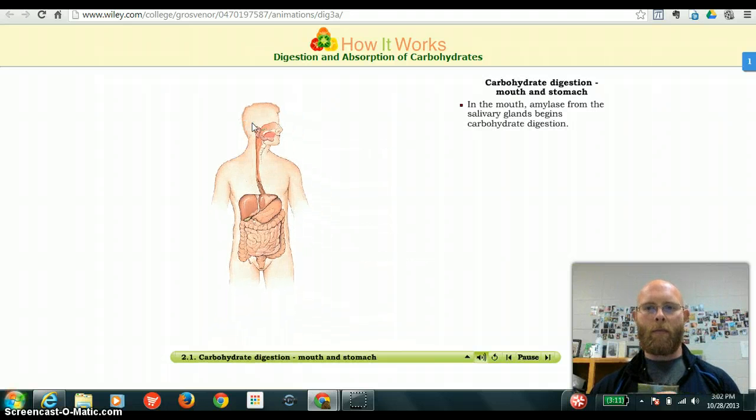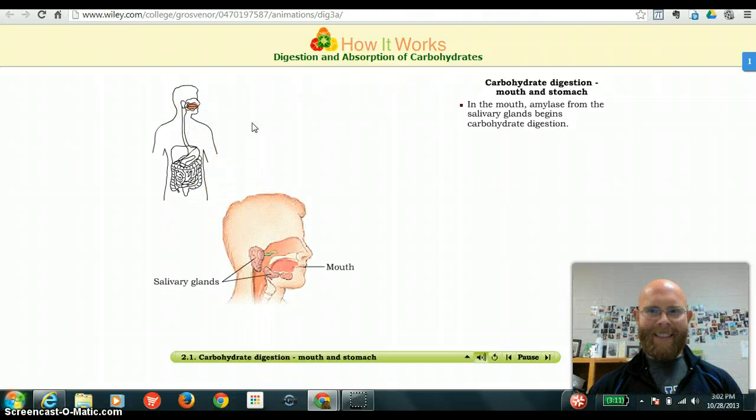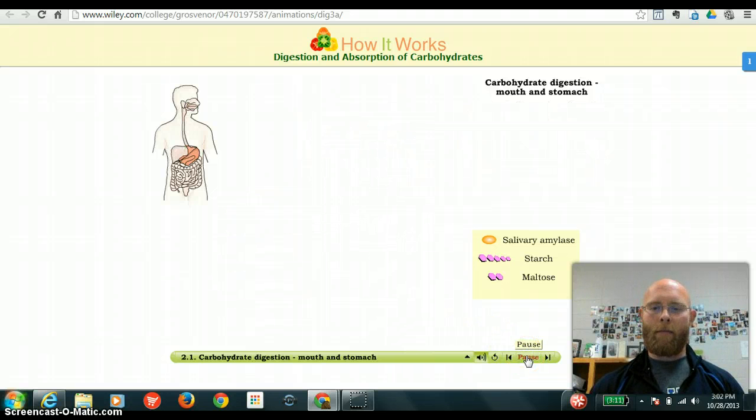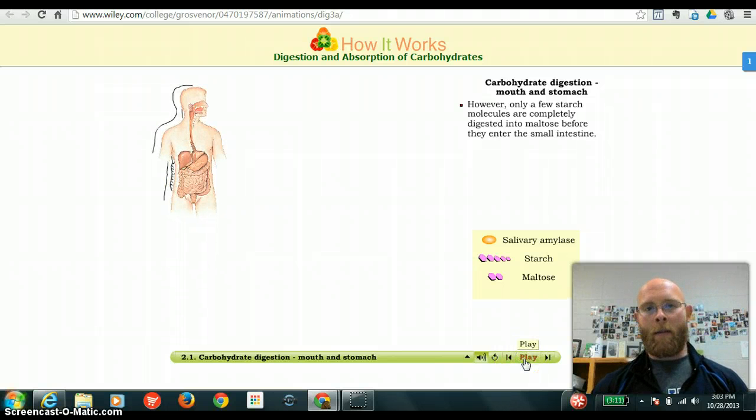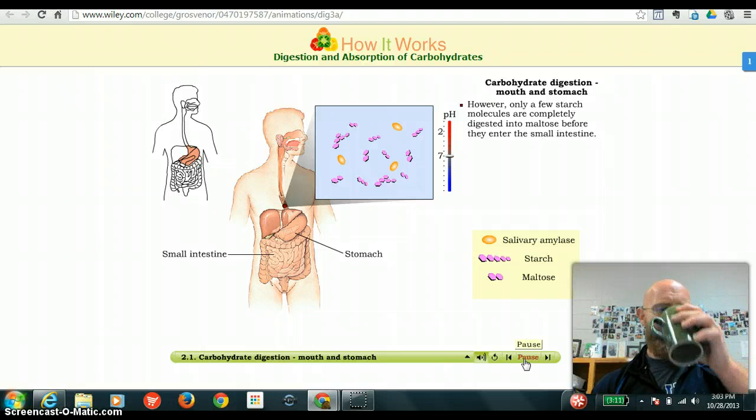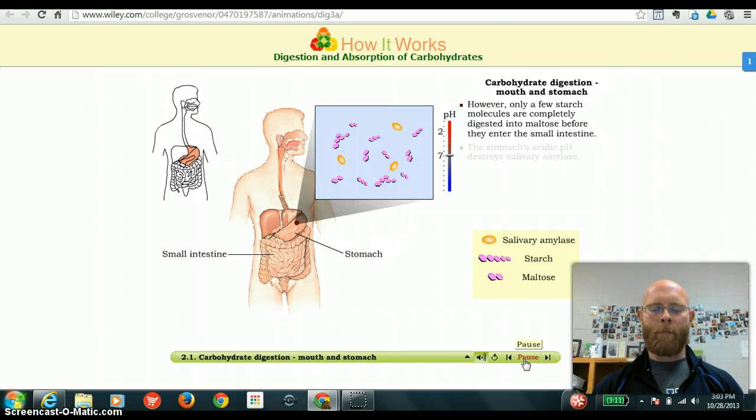In the mouth, amylase from the salivary glands begins carbohydrate digestion. Salivary amylase breaks starch down into smaller polysaccharides and sugars like maltose. However, when did the digestion of carbohydrates begin? Pay attention to things like that, because that's one of the things I want you to be able to do: identify when, where, and how these enzymes come into play and what they do. The starch molecules are completely digested into maltose before they enter the small intestine. This is because the acidic pH of the stomach destroys salivary amylase and the enzymatic content of saliva is low.